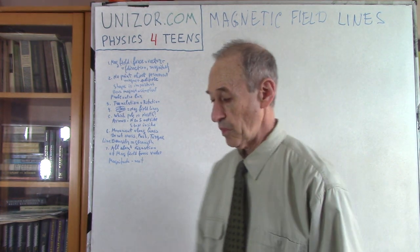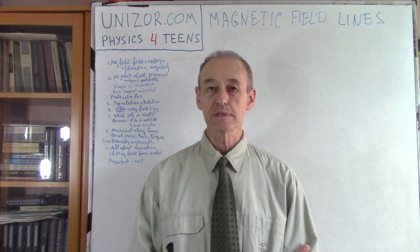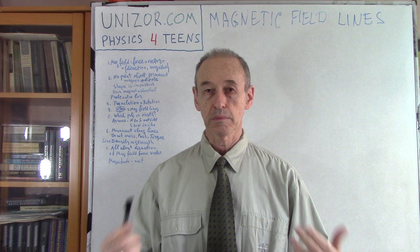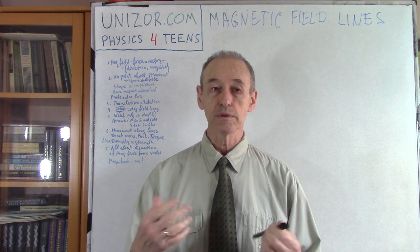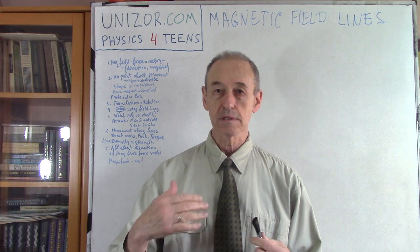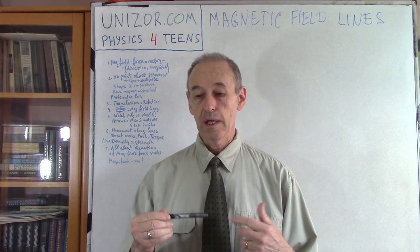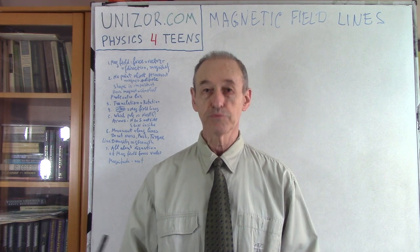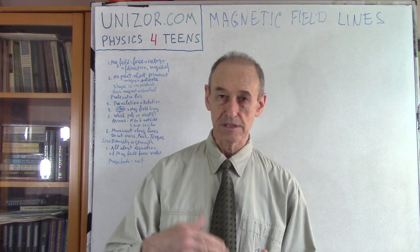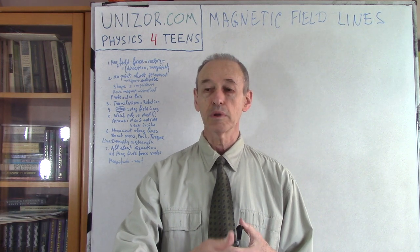So, magnetic field. Field is a concept. It basically tries to explain what happens in the space around something which is a source of the field. In our case we are talking about space around a permanent magnet, and we know that there is a certain force which acts on other objects at a distance from the source of magnetic field.